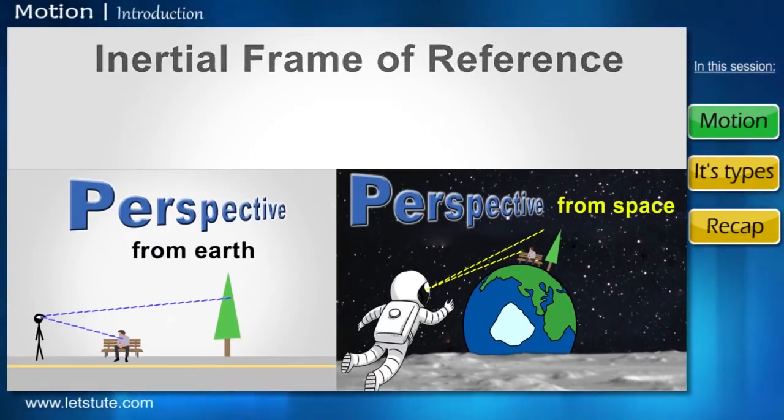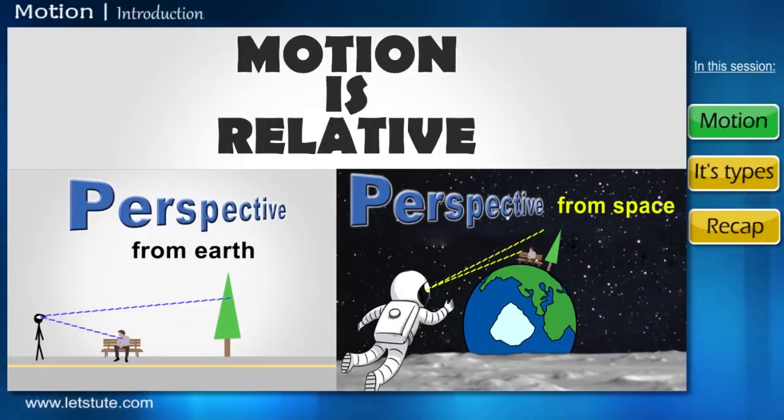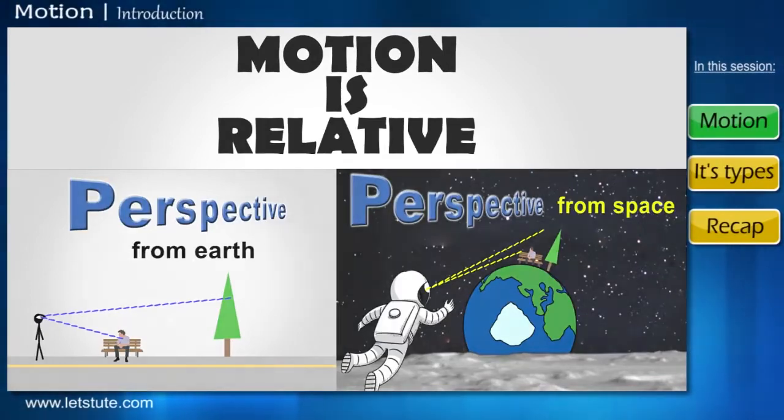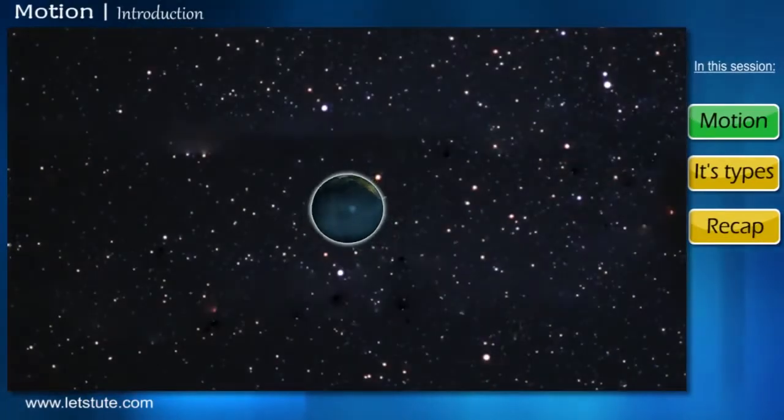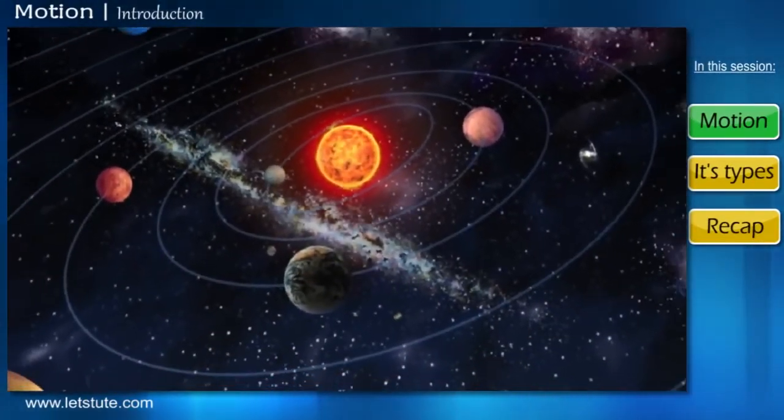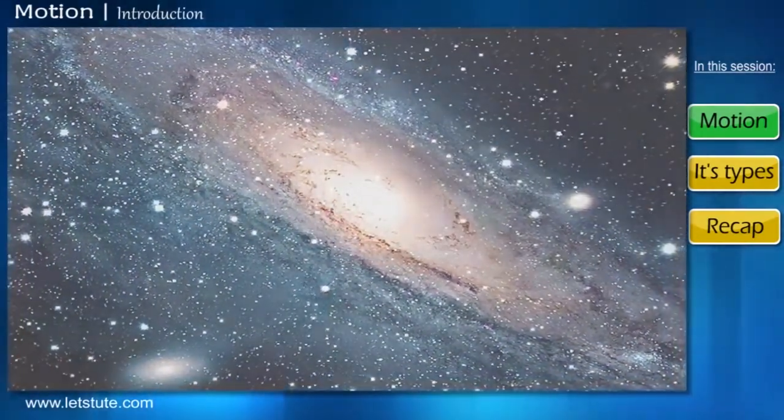So what we are trying to get at through all this is the fact that the feeling of things moving and being stationary is because motion is relative. So now let's keep in mind that this concept of motion is not limited to objects on Earth alone, but also objects beyond it, like the solar system and galaxies in space. Let's understand this with the situation.